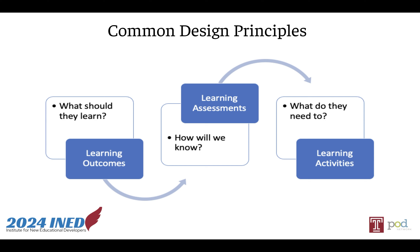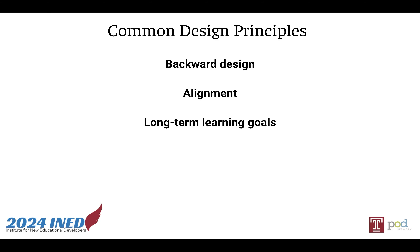We can also think about alignment beyond our course to our program goals, college or institutional goals, or even external goals for broader alignment. Beyond backward design and alignment is the idea of long-term learning goals. Although course design often focuses on what we want students to learn by the end of a course, most of these processes also think about what we want for students more broadly and holistically. These are the concepts of enduring questions from Wiggins and McTie, or the six domains of Fink's significant learning taxonomy, which help us get beyond immediate content and focus on long-term knowledge, application skills, thinking and writing skills, metacognition, and habits or practices of our disciplines.